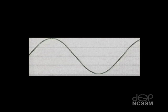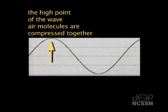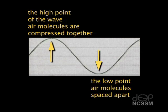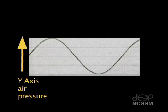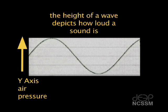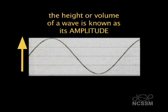I have chosen this frequency because it's in the middle of the musical range and many instruments can play this pitch. Let's review the parts of the wave. The high point of the wave represents the place that air molecules are compressed together. The low point represents the place where they are spaced apart — the y-axis is air pressure. The height of a wave depicts how loud the sound is: taller waves are louder, shorter waves are quieter. The height or volume of a wave is known as its amplitude. This will become very important as we look at the unique qualities of the waves generated by different instruments.